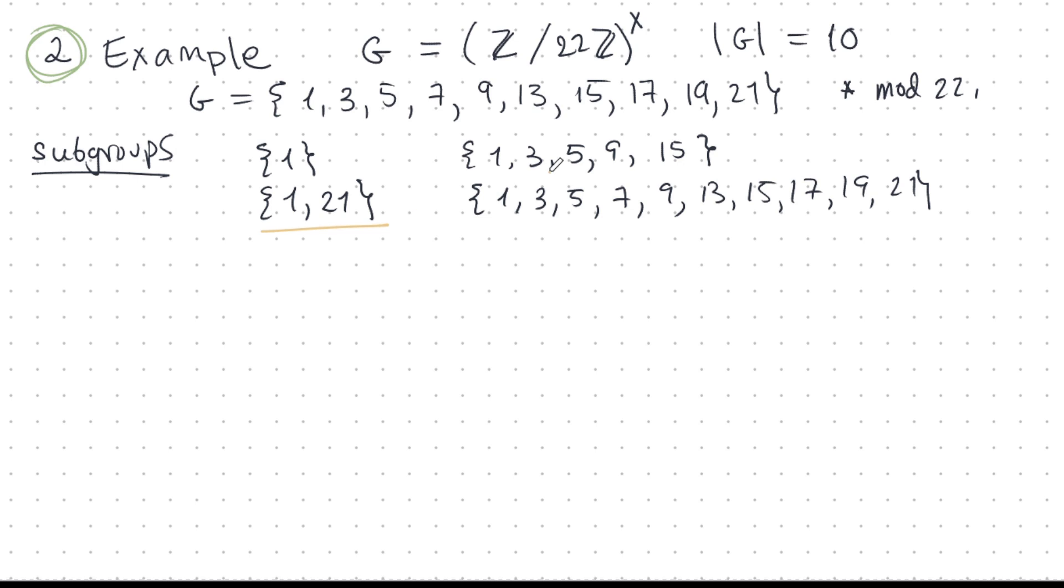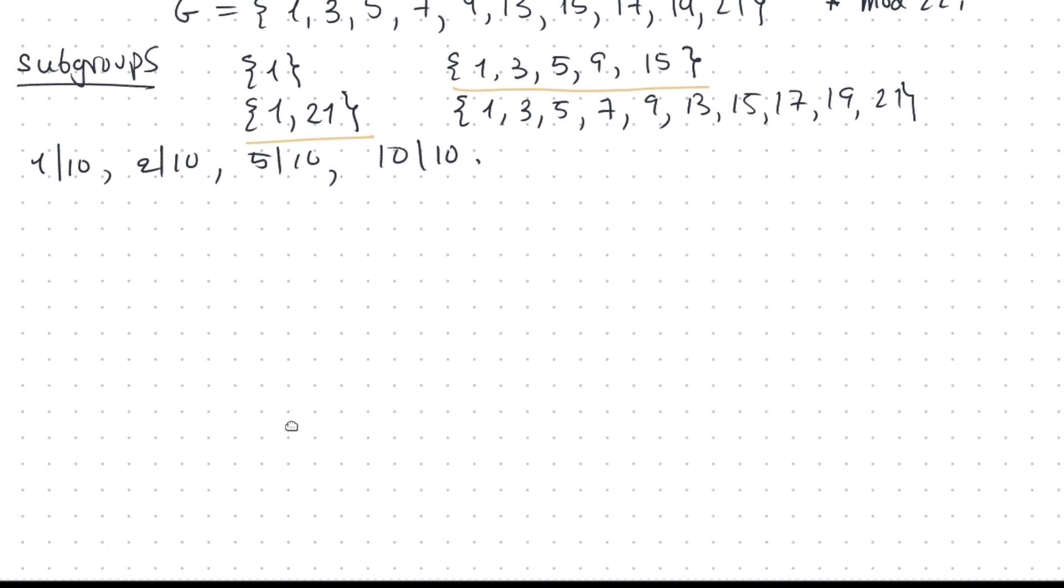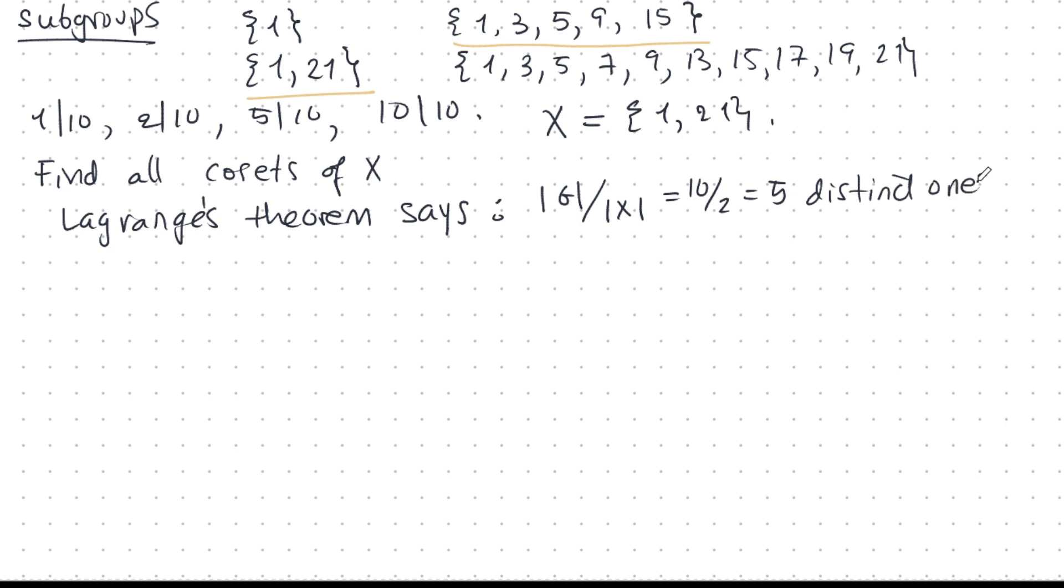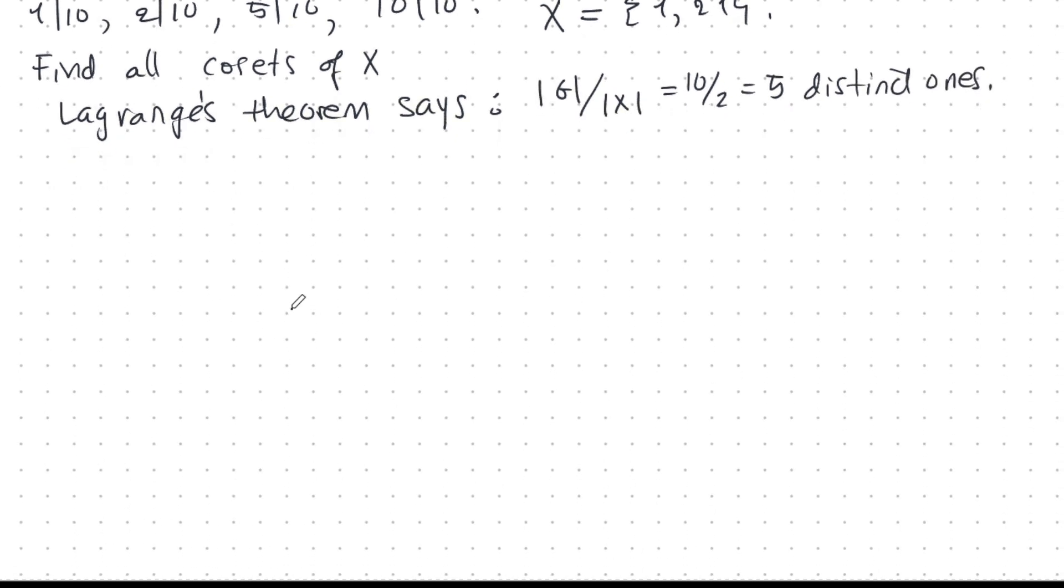Right. So let's look at these two here. This one and this one. And check it out. Let's see what Lagrange's theorem says about this. Well, first of all, Lagrange's theorem says that these orders of these subgroups will divide the order of G. And is that true? Yeah. One divides 10. Two divides 10. Five divides 10. And 10 divides 10. Just like how Lagrange's theorem says. Okay. So let's take for the moment subgroup 121. Let's find all cosets of X. What does Lagrange's theorem say about this? Well, Lagrange's theorem says that there is order of G divided by order of X distinct ones. So that's 10 divided by 2. So that's five distinct ones. Five distinct ones. Let's see if that's true.